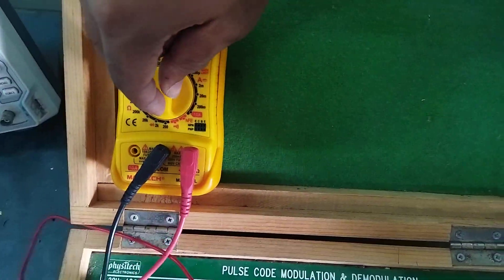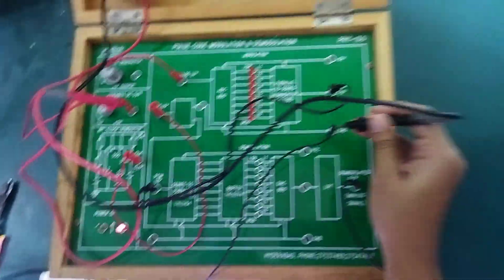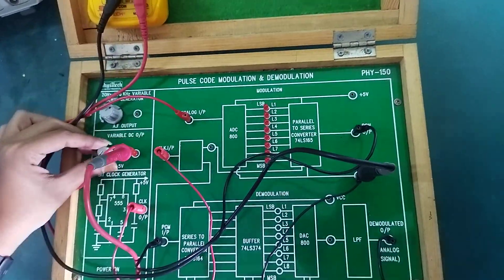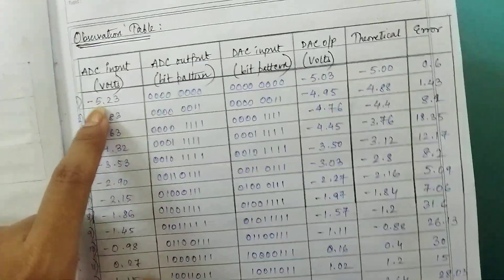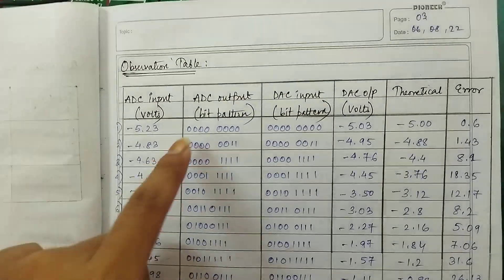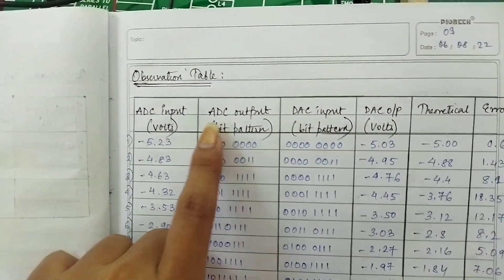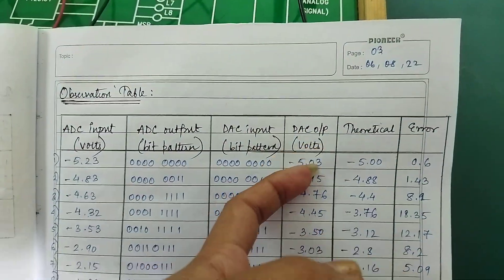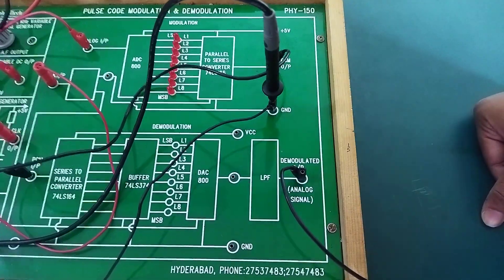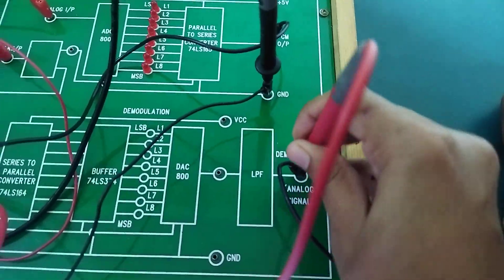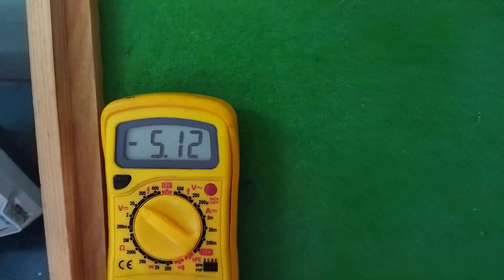For the first code, the measured value is minus 5.19. The bit pattern is all zeros. Another reading shows minus 5.23. The DC output is from the bit pattern. We can see the equivalent DC voltage. We can see the difference between DC and DAC output. The measured value is minus 5.11.